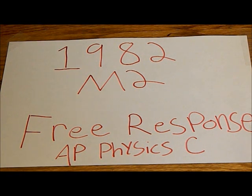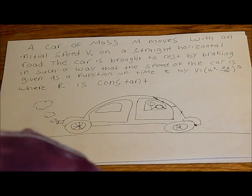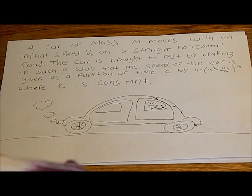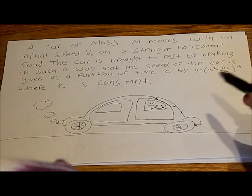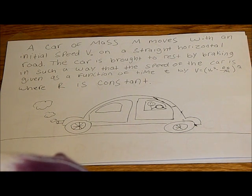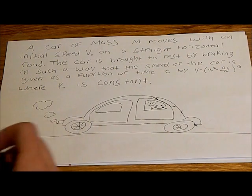Today we're going to do the free response question from 1982, the second one from mechanics for the AP Physics C test. The question says: a car of mass m moves with an initial speed v-naught on a straight, horizontal road. The car is brought to rest by braking such that the speed is given as a function of time t by v equals the square root of v-naught squared minus rt over m, where r is a constant.